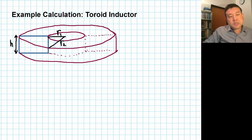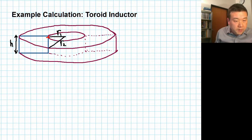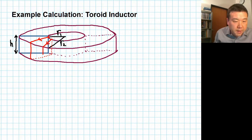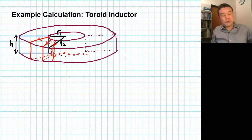To finish specifying the toroid, I have to tell you how the wire is wrapped around this geometric object. The wire goes radially outward, then wraps downward along the bottom surface, wraps back and comes up along the inner diameter, comes out radially again, wraps down, and then goes back along the bottom surface, comes back up, and so on. You have to imagine this wrapping continuing around the entire toroid.